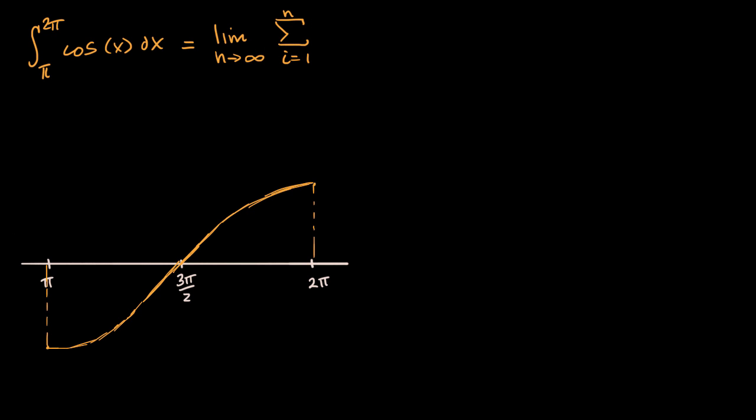So as a Riemann sum, what we want to do is think about breaking this up into a bunch of rectangles. So let's say, or I should say n rectangles. So that's our first one right over there.